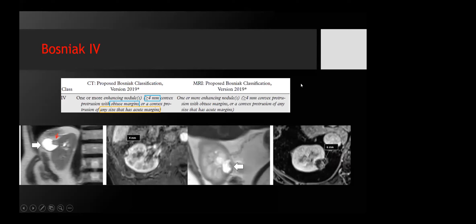Moving on to Bosniak 4: this is a lesion that has one or more enhancing nodules measuring four or more millimeters with convex protrusion with obtuse margins, or a convex protrusion of any size that has acute margins. So even less than four millimeters, if it has acute margins, it can be categorized as Bosniak 4.